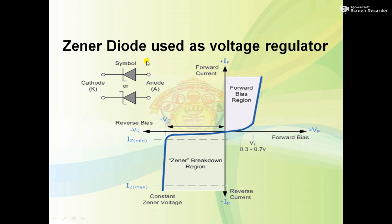The very important thing is when the Zener diode acts as a voltage regulator circuit. The Zener diode has the same characteristics as a PN junction diode in the forward bias region. However, in the reverse bias region, the PN junction diode is in the off state, whereas the Zener diode acts as a voltage regulator circuit in the reverse bias region.